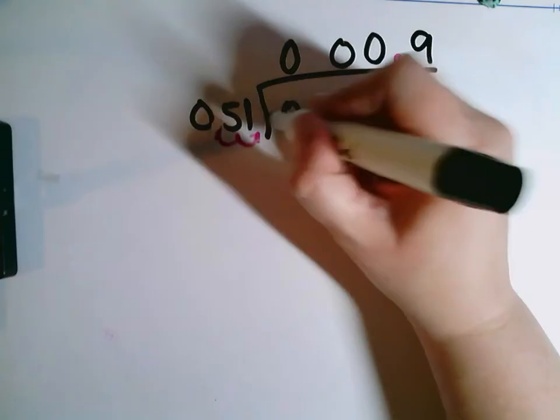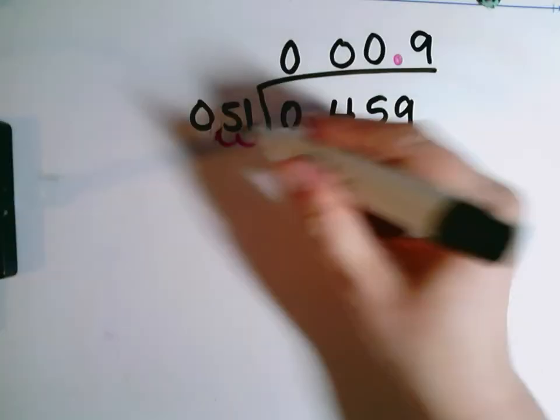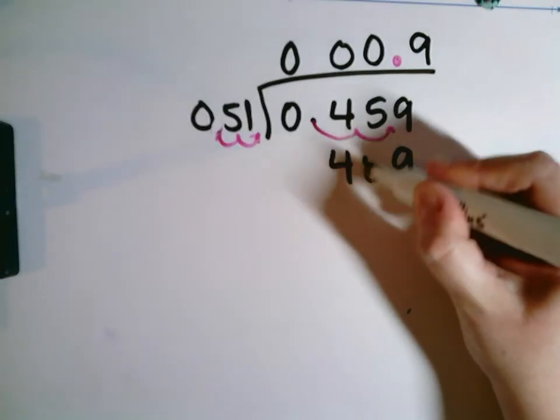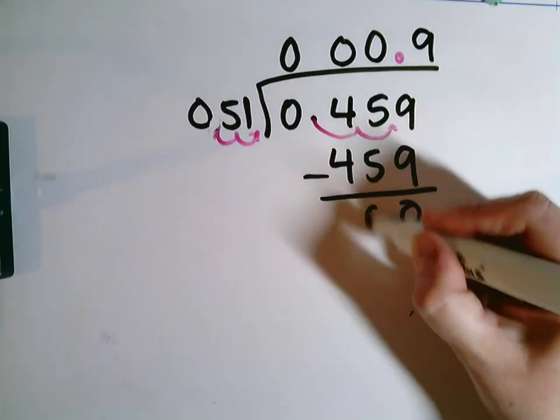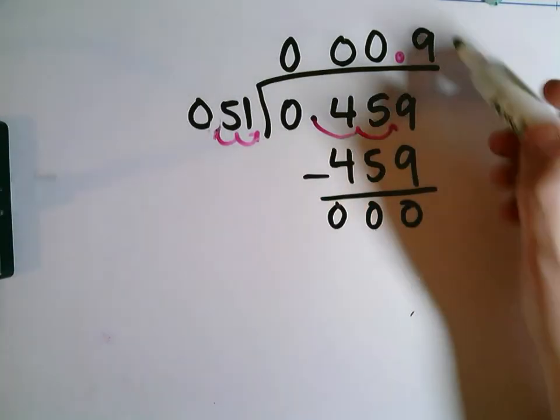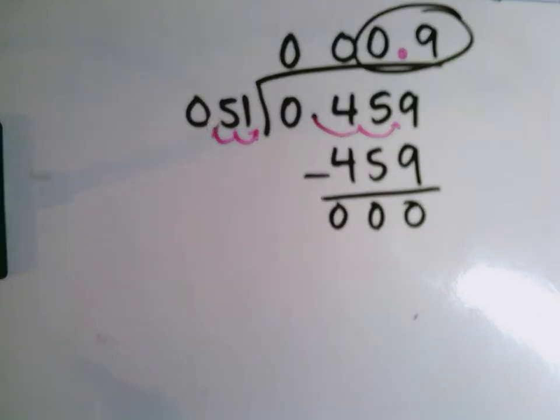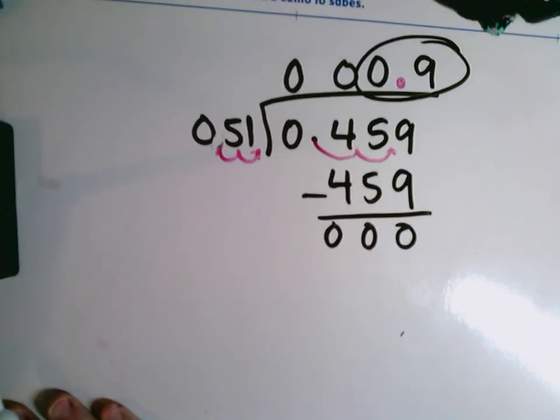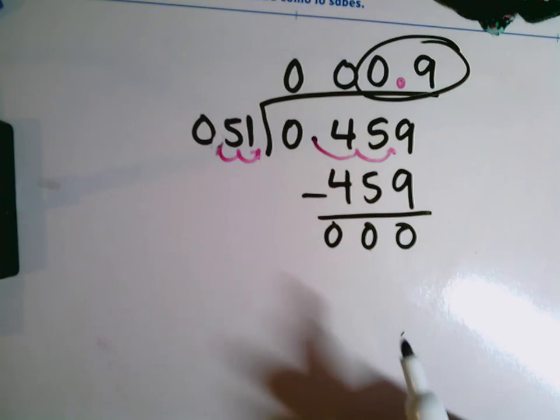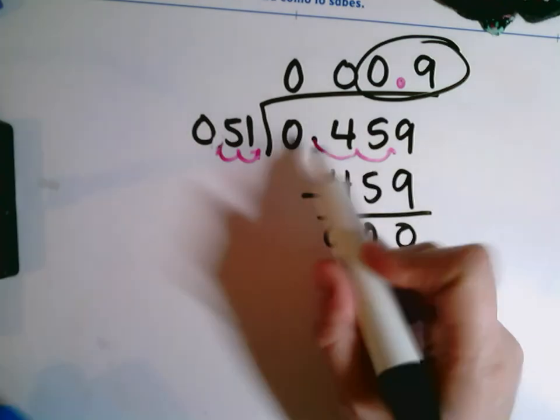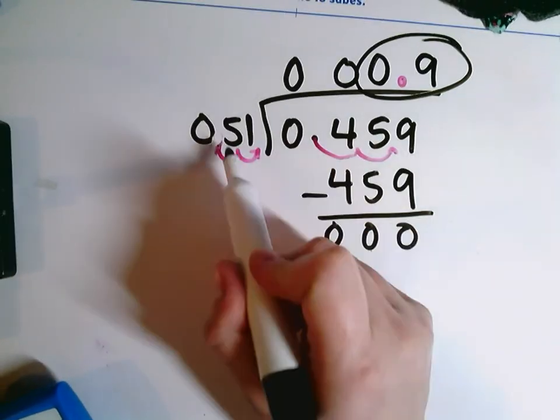Nine times one is nine. Nine times five is 45. And when I subtract, I don't have anything left. And here I have nine tenths. Nine tenths here as my quotient, just like we found in the calculator, as long as we're putting our dividend into our calculator first and then dividing by our divisor.